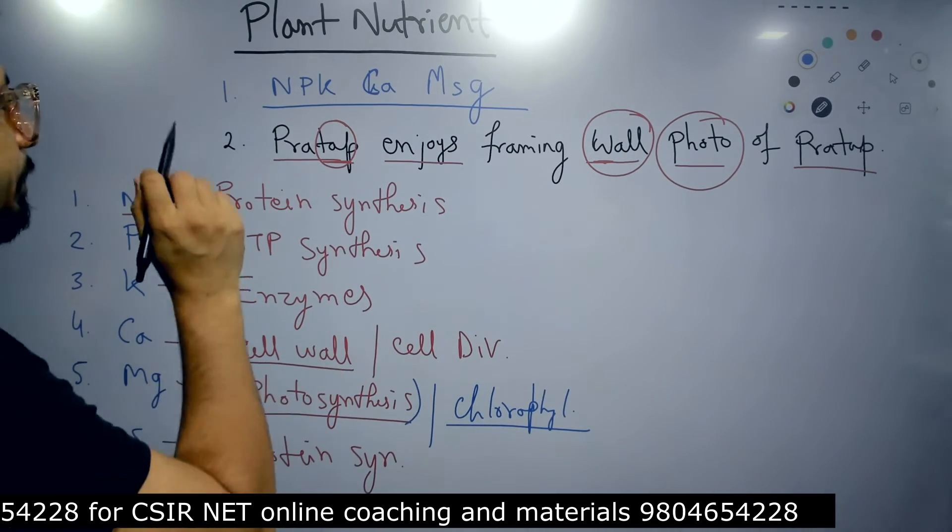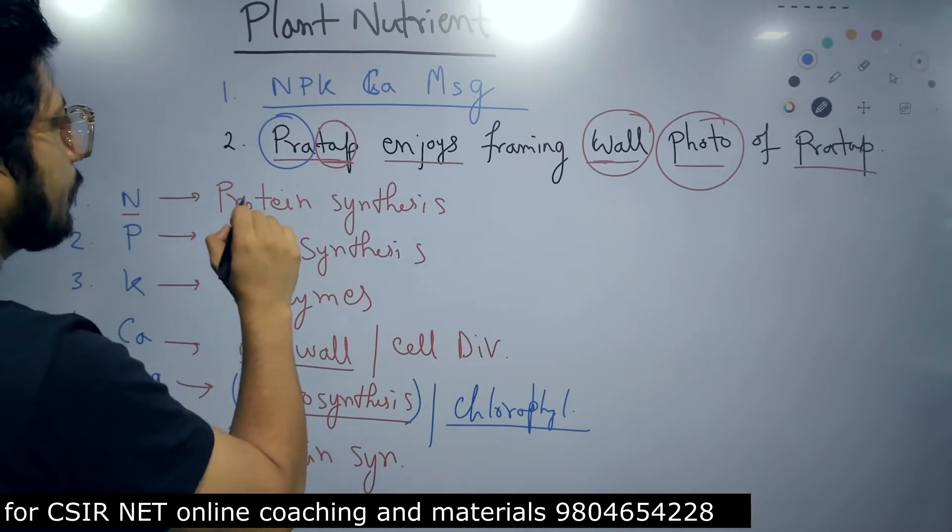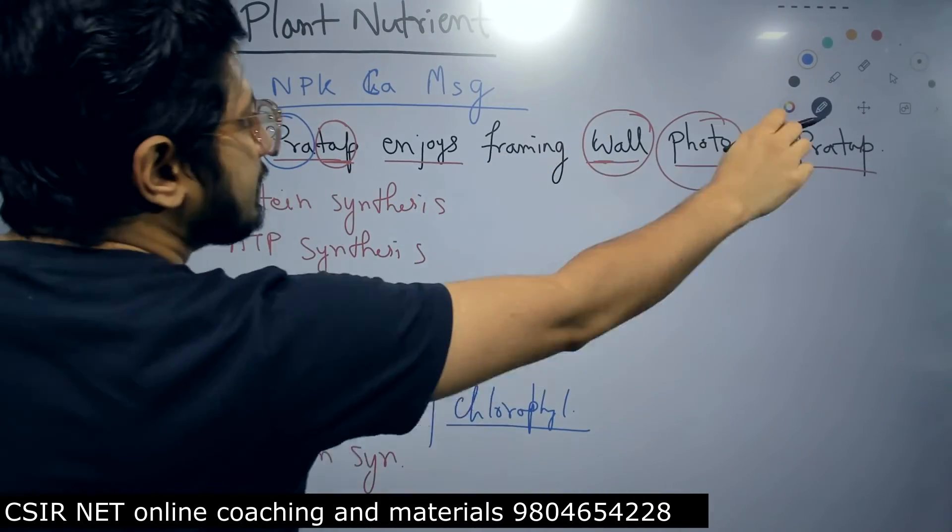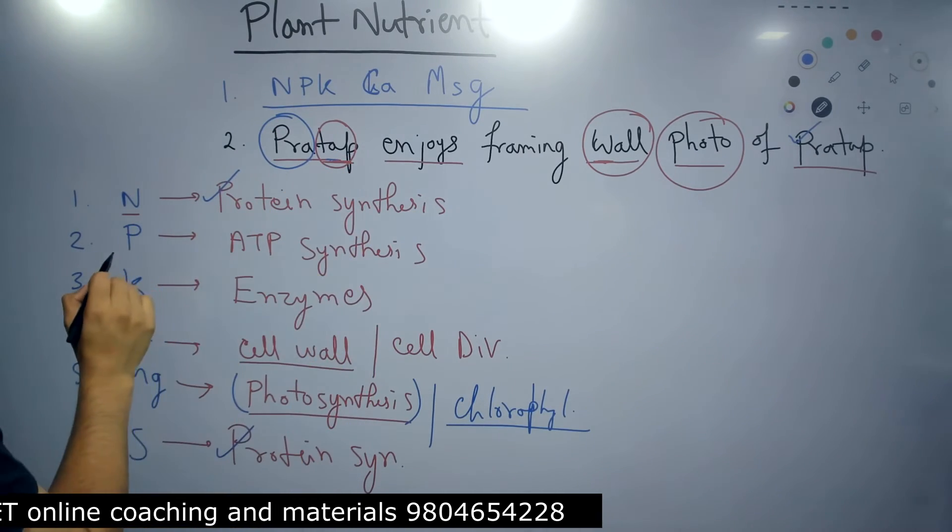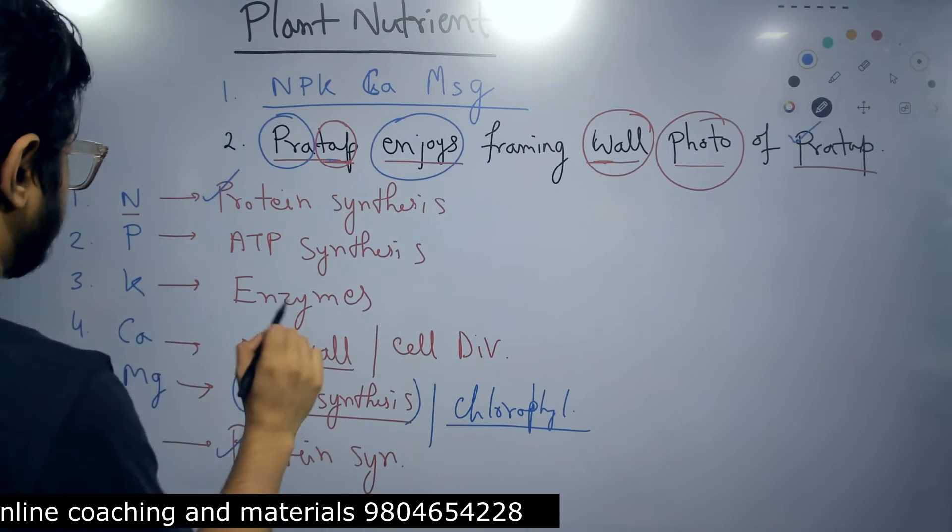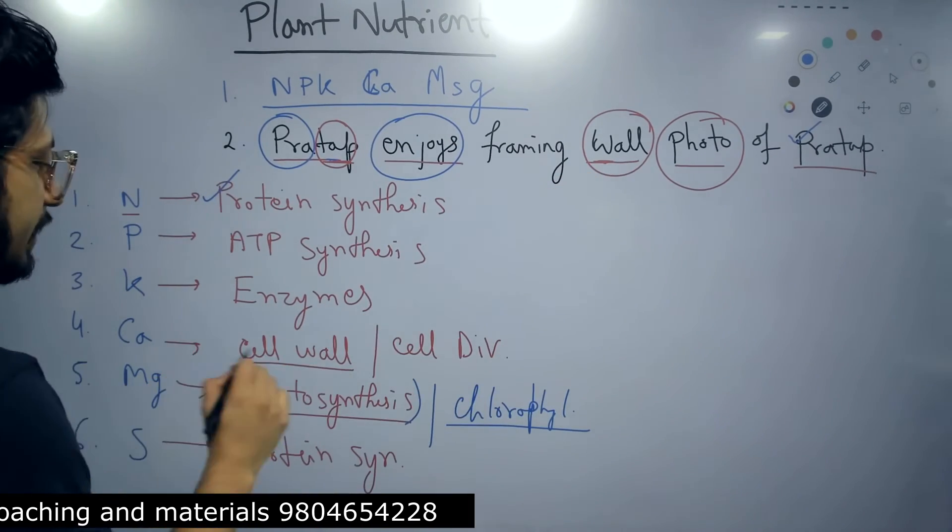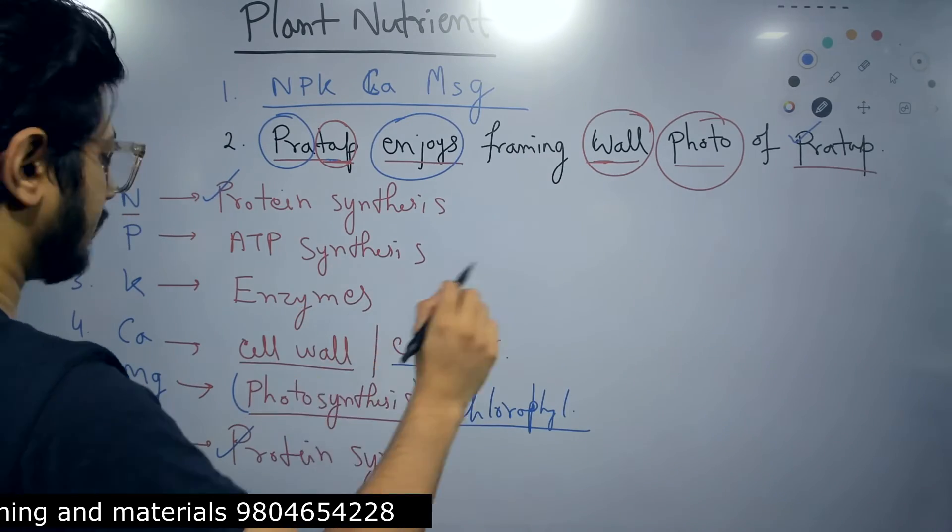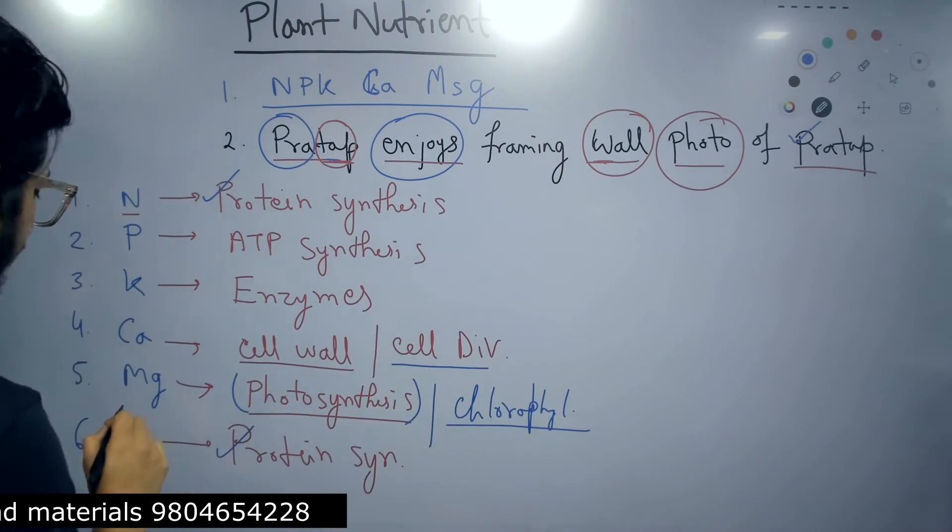Pratap enjoys framing wall photo of Pratap. So Pratap, PR for the protein starting with the protein. Last end in the P, Pratap for protein. In the middle, TAP, ATP, ATP synthesis for phosphorus. Enjoys, enzymes for potassium. Then wall, calcium, cell wall formation and cell division. And then photo. Photo is photosynthesis, chlorophyll production. That is magnesium. And obviously that is how it ends.